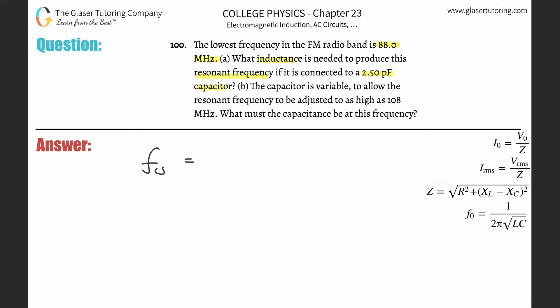Since we're talking about resonant frequency, let's write out the formula. It's 1 divided by 2π times the square root of the inductance multiplied by the capacitance.